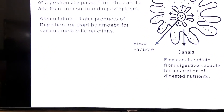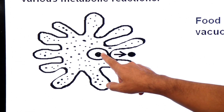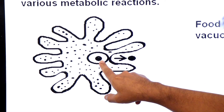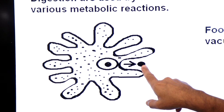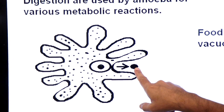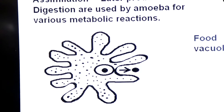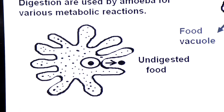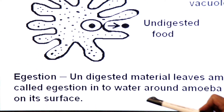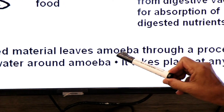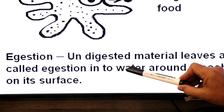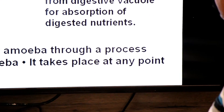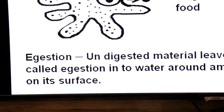The last step is egestion — removal of undigested food. The food vacuole containing undigested food touches the plasma membrane, and the undigested material is expelled out of the body. This process is called egestion and it can take place at any point on the surface of amoeba into the surrounding water.